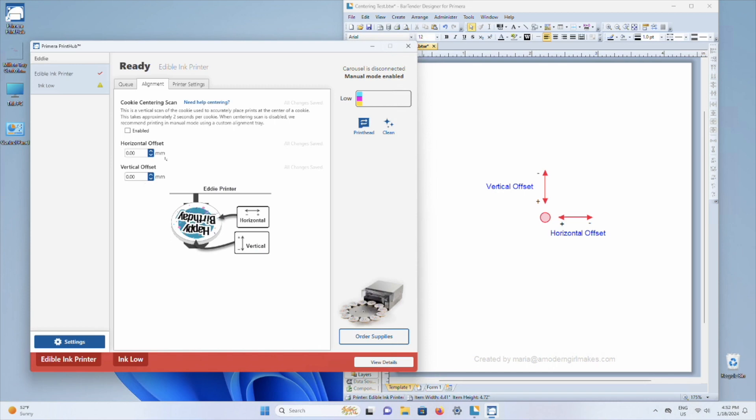Now for the purposes of this tutorial, I have set my horizontal offset and vertical offset to 0, 0, just so that you can see what it looks like when it doesn't print centered. I know this is going to mess it up by doing 0, 0.